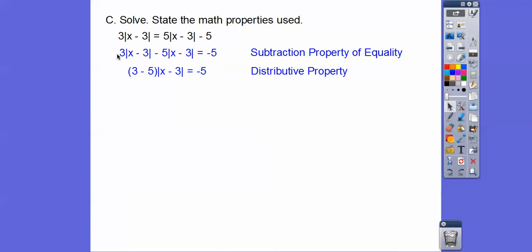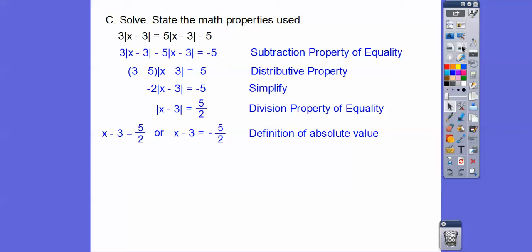We have this absolute value. We have 3 of them, and here we have negative 5 of them. So we pulled the 3 and the negative 5 out. This is going to be negative 2 of those absolute values. Now we divide both sides by negative 2, and then now it equals plus or minus 5 halves, and then just add 3 to both sides. I'll change 3 to 6 halves to get common denominators. Here we are, 3 equals 6 halves.